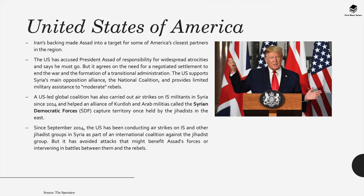A US-led global coalition has also carried out airstrikes on IS militants in Syria since 2014, and helped an alliance of Kurdish and Arab militias called the Syrian Democratic Forces capture territory once held by the jihadists in the east. Since September 2014, the US has been conducting airstrikes on IS and other jihadist groups in Syria as part of an international coalition, but has avoided attacks that might benefit Assad's forces or intervening in battles between them and the rebels.